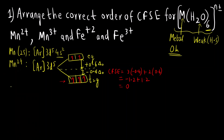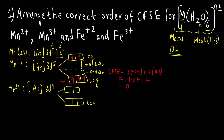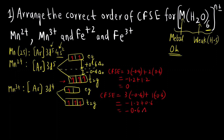Now for Mn³⁺: two electrons are removed from 4S and one from 3D, giving [Ar] 3D4. Again it is an octahedral complex with T2G and EG levels. Filling four electrons (one, two, three, four), CFSE = 3×(-0.4) + 1×(0.6) = -1.2 + 0.6 = -0.6Δ₀.